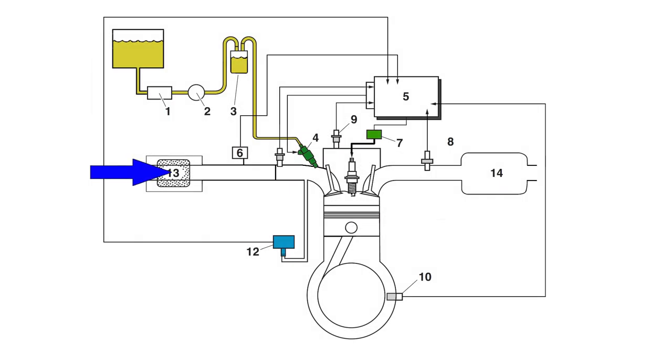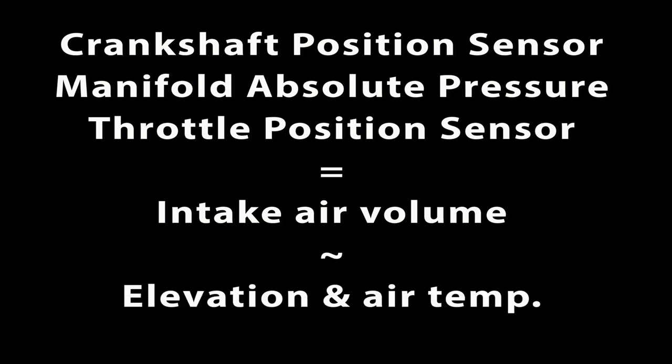The factory engineers spend many hours testing and verification of the airflow characteristics of an engine, from the intake, combustion chamber, and piston design, all the way through the exhaust system. The engineer then creates formulas which take the voltage signals, mainly from the crankshaft position sensor and the air intake pressure sensor, and then factors in the throttle position sensor settings to determine very precisely how much air will flow into an engine at all throttle settings, making adjustments for elevation and air temperature.